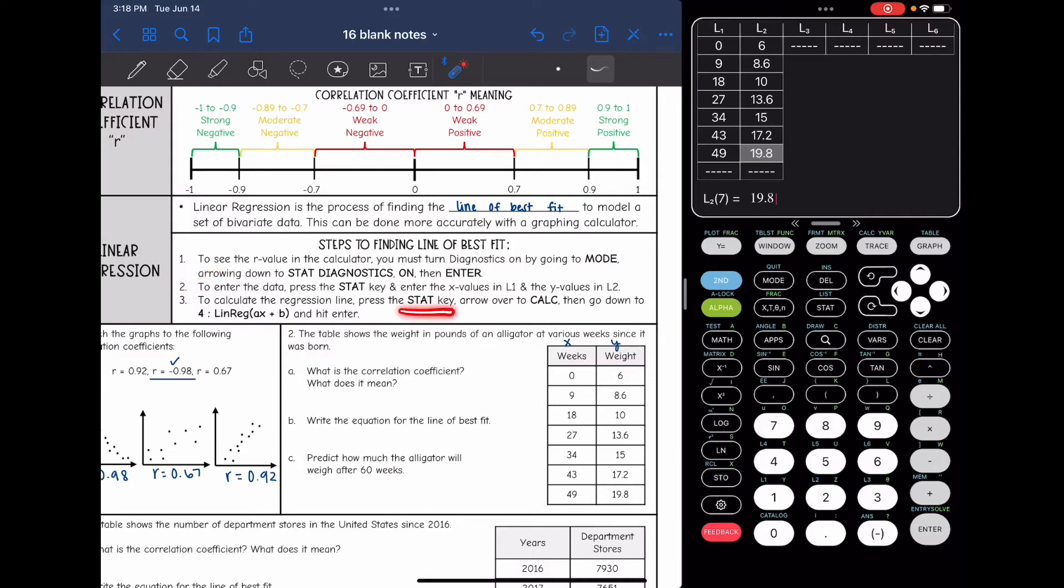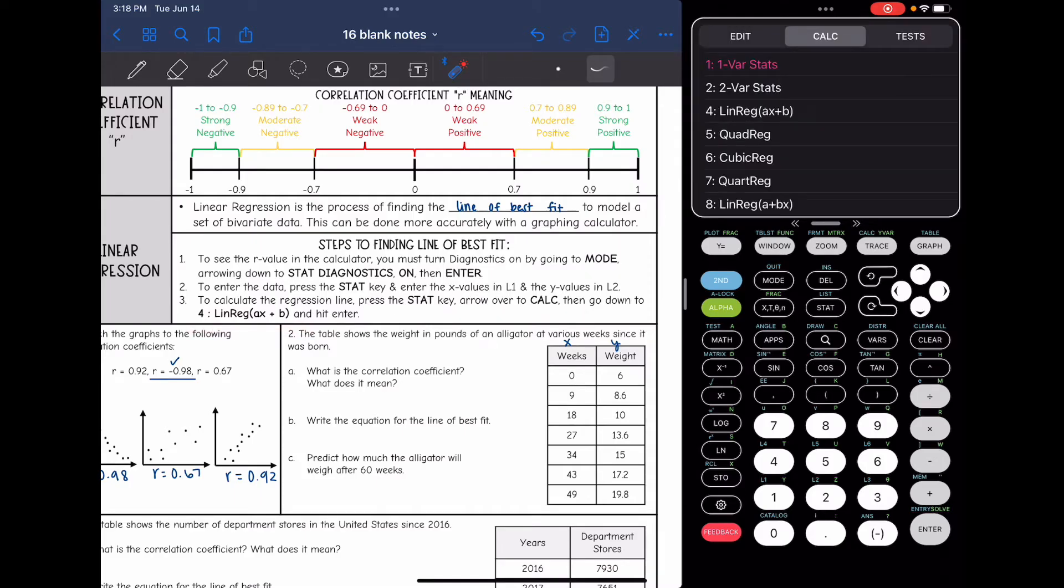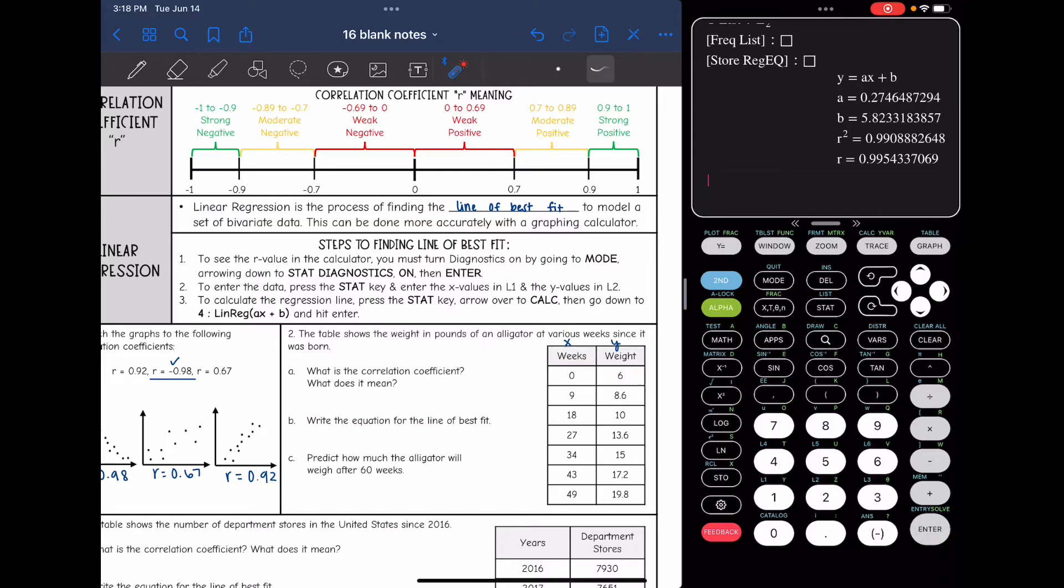Now I'm going to do the stat key, arrow over to calc, then go down to 4 for linear regression. So stat, arrow over to calc for calculate, and we're going to go down to 4. We want it to calculate linear regression. And then I'm going to hit enter.